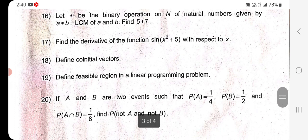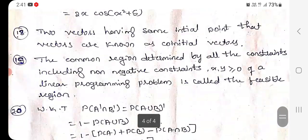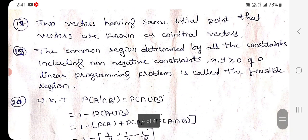Question 18: Define co-initial vectors. Co-initial vectors means if two vectors have the same initial point, then those vectors are known as co-initial vectors. Question 19: Define the feasible region. The feasible region is the common region determined by all the constraints including non-negative constraints X, Y are positive of a linear programming problem.